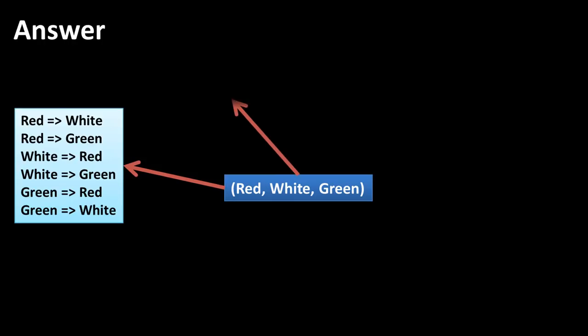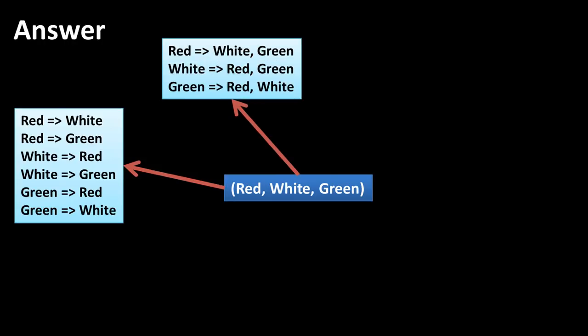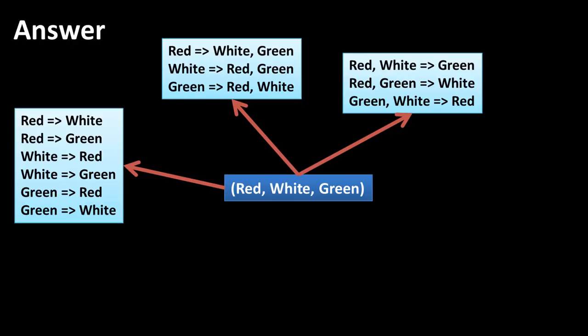Now let's think of rules in which you've got one item in the antecedent and two items in the consequent. Clearly we can get three such rules, because each of the three items can occur as the antecedent, and once you put that as the antecedent, the remaining two are going to be in the consequent. And similarly, we can look at rules in which you've got two items in the antecedent and one item in the consequent — once again three rules, because each of the three items can be the consequent and the remaining two would be in the antecedent. Initially it appears as if these 12 rules are the only rules you can derive from this.